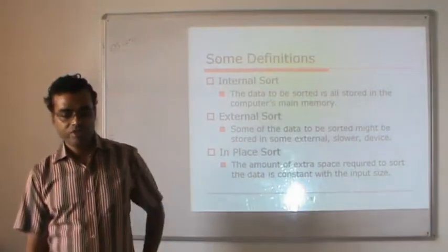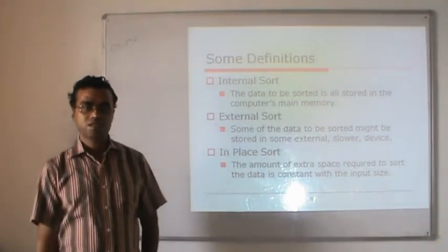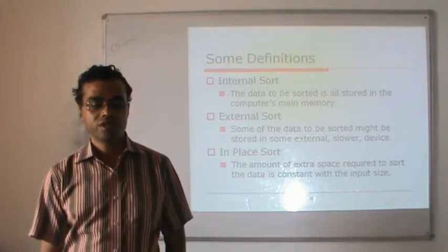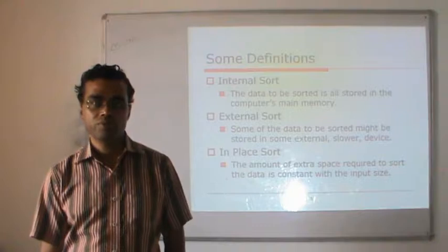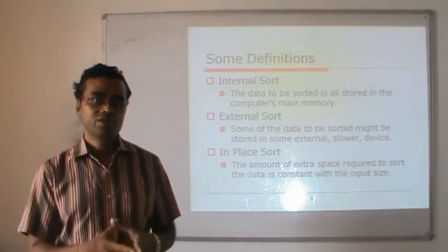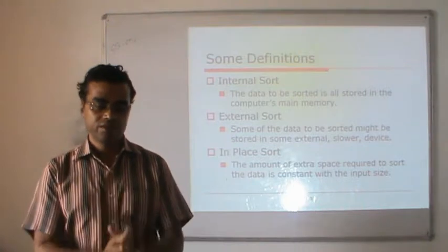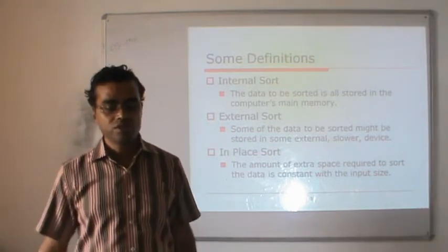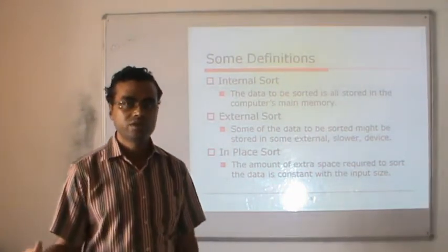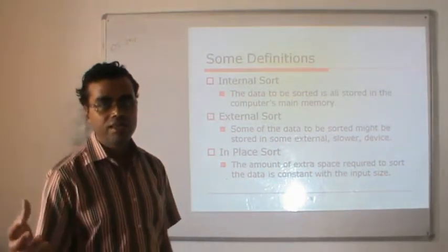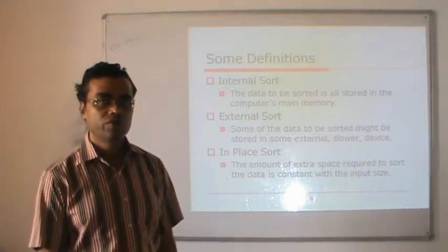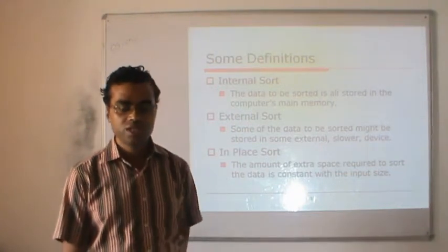There are some kinds of sorts. Internal sort is when the data being sorted is stored in the computer's main memory — a small amount of data within main memory that we can sort. External sort is when the data to be sorted is stored on external storage media like hard disk files, and we perform sorting on those.